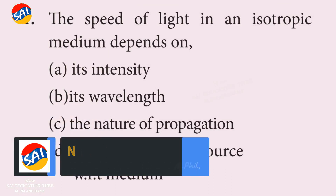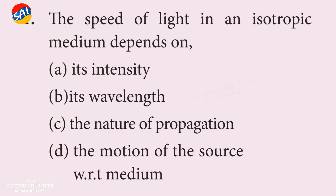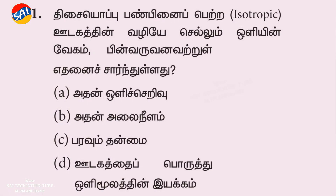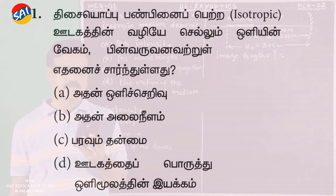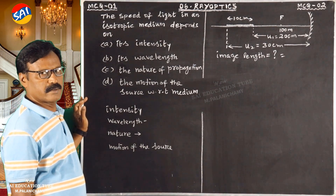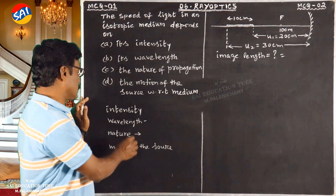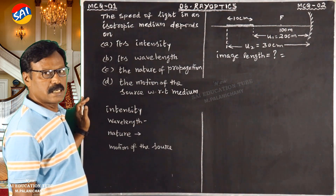The speed of light in an isotropic medium depends on its intensity, its wavelength, the nature of propagation, and the motion of the source with respect to the medium. The speed of light in an isotropic medium is the speed of light.